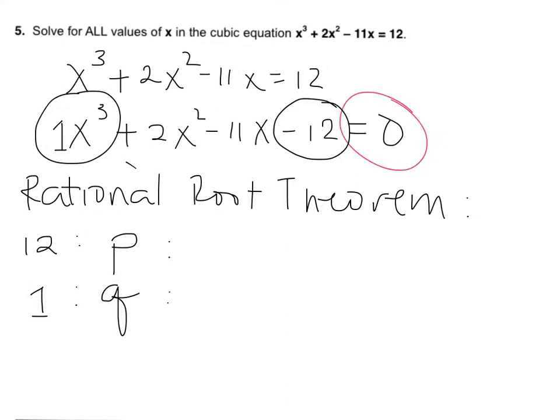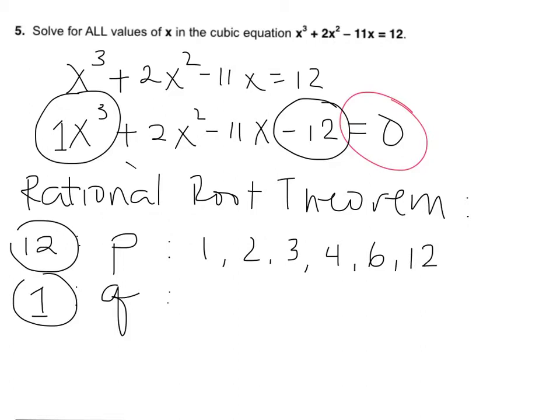p and q are simply the factors of 12 and 1 respectively. So for p, the factors of 12 are 1, 2, 3, 4, 6, and 12. The factors of q — the factors of 1 — is simply 1.